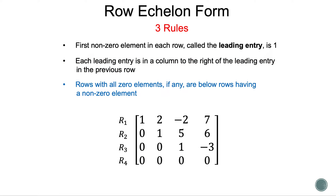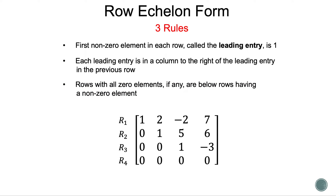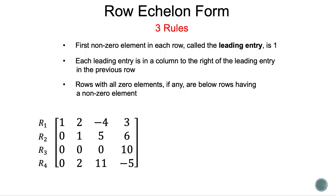Now let's take a look at Rule 3: rows with all zero elements, if any, are below rows having a non-zero element. In this case, row 4 has all zeros, so that is why it is on the bottom row. That is all the rules of row echelon form. In a bit we'll talk about reduced row echelon form, but now let's take a look at an example on how to change a matrix into row echelon form.